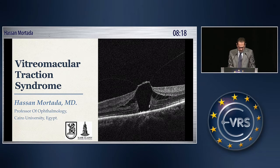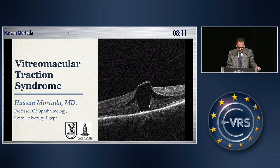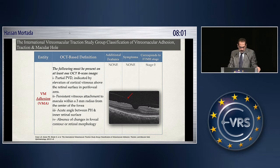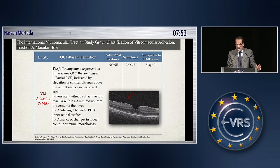The next vitromacular interface disorder is the vitromacular traction syndrome. I think you are all acquainted with the new classification, the International Vitromacular Traction Study Group Classification of Vitromacular Adhesion and Traction. Without going into detail, because you have the text and the paper in the journal, we have to differentiate between vitromacular adhesion and vitromacular traction.